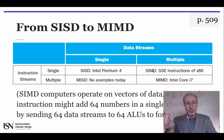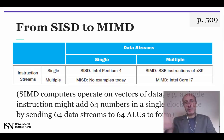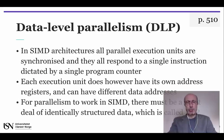The other relevant combination represented in this table is SIMD, where a single instruction might add 64 numbers in a single clock cycle by sending 64 data streams to 64 ALUs, for example.